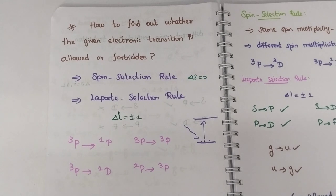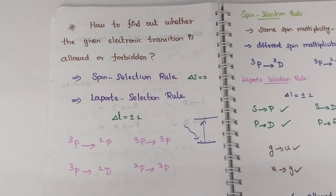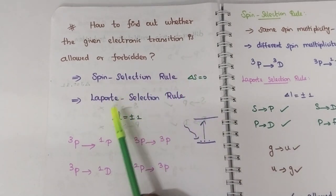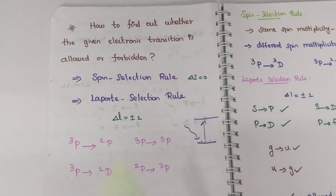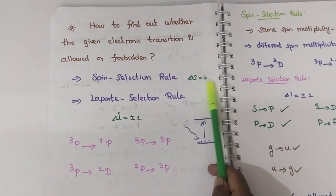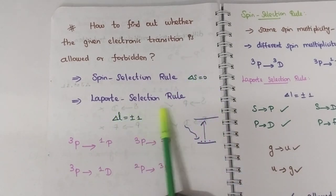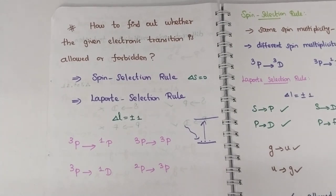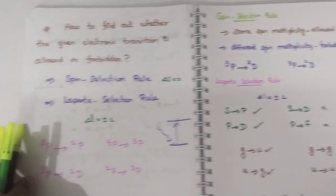Depending on the rule, electronic transitions will be either allowed or forbidden. There are two rules: the spin selection rule, where ΔS should be 0, and the Laporte selection rule, where ΔL should be plus or minus 1.